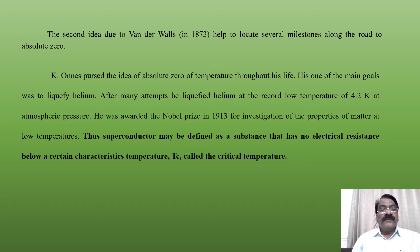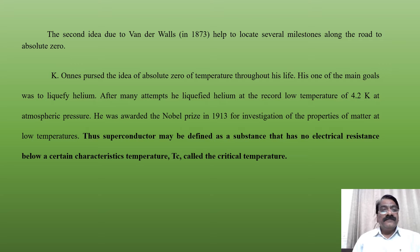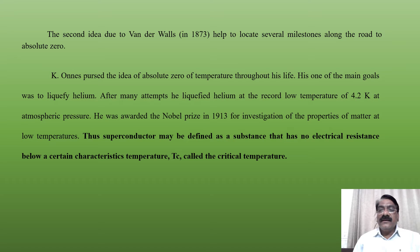The second idea, due to van der Waals in 1873, helps to locate several milestones along the road to absolute zero. Kamerlingh Onnes pursued the idea of absolute zero temperature throughout his life. One of his main goals was to liquefy helium. After many attempts, he liquefied helium at the record low temperature of 4.2 Kelvin at atmospheric pressure. He was awarded the Nobel Prize in 1913 for investigation of the properties of matter at low temperature. Thus, a superconductor may be defined as a substance that has no electrical resistance below a certain characteristic temperature Tc, called the critical temperature.